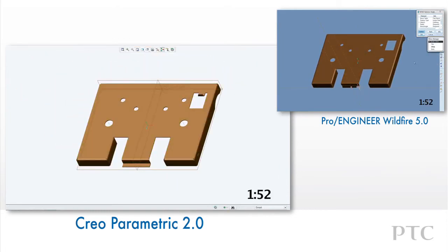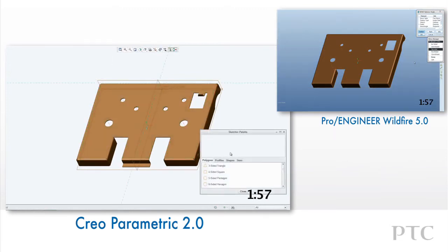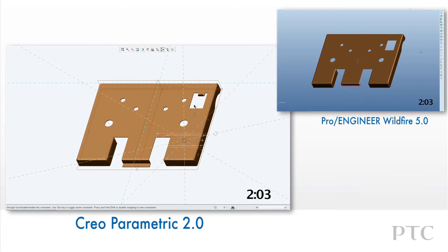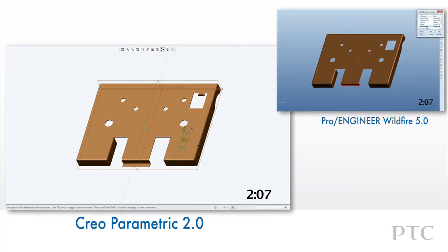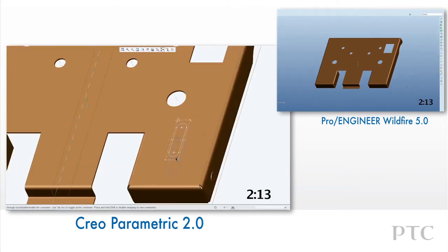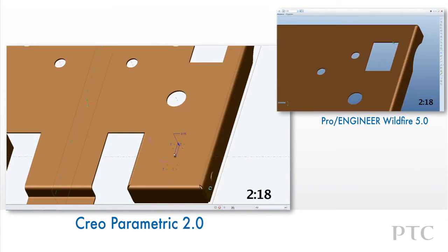We can sketch another form by adding a race track section and then dragging the depth to the desired value. We can add taper and then ensure that we add rounds in the form and at the intersection of the form and the walls. In Pro Engineer Wildfire 5, we would have had to create a separate form part to accomplish this, or a quilt with the draft geometry already built in prior to creating the form feature.